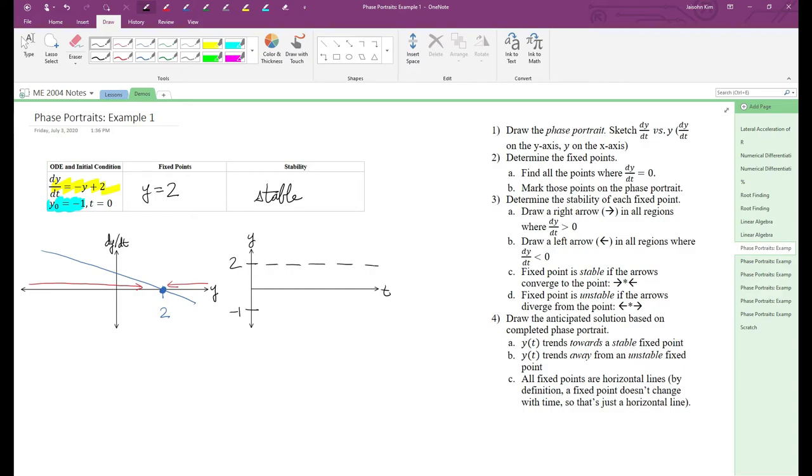Finally, we draw curves towards or away from our fixed point starting from our initial condition. The fixed point is stable, so y of t will trend towards it. This is a qualitative sketch, so your curves don't need to be perfect.